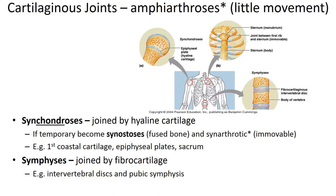Cartilaginous joints can be subcategorized as synchondrosis or symphysis. A synchondrosis joint is a rigid, highly cartilaginous bridge that unites the bones. One example is the cartilaginous joint found between the ends of the first pair of ribs and the manubrium of the sternum. Another example is the epiphyseal plate, which holds the epiphysis of a long bone to the diaphysis.